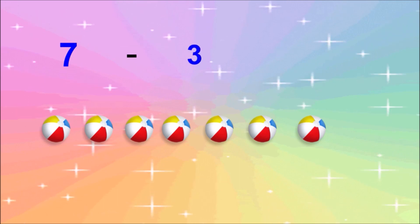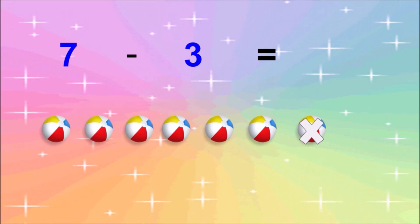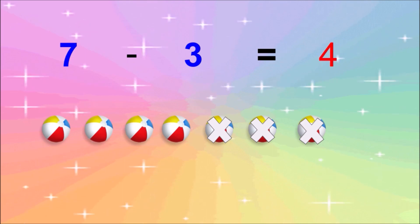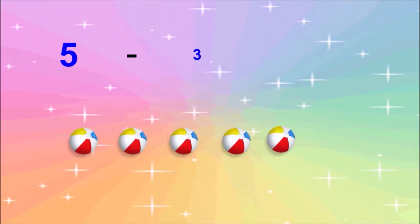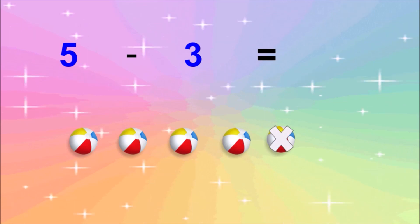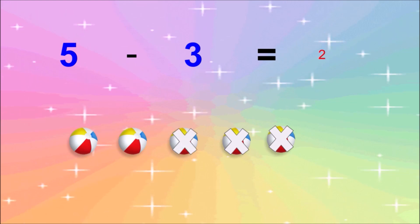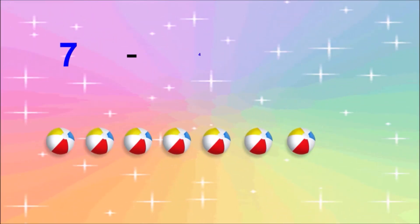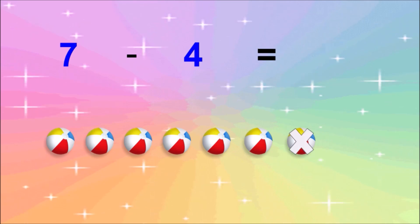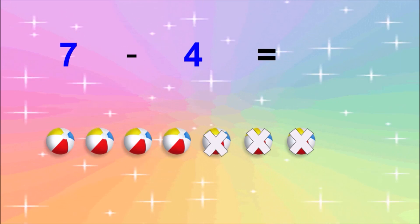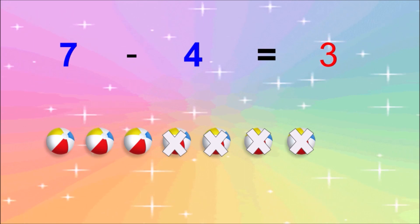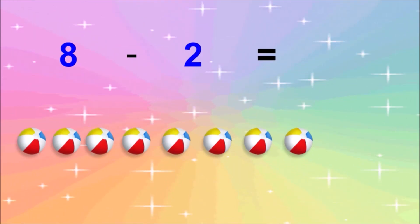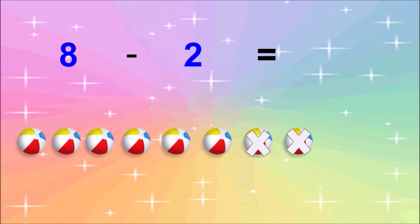7 minus 3 equals 4. 5 minus 3 equals 2. 7 minus 4 equals 3. 8 minus 2 equals 6.